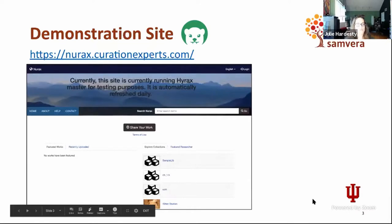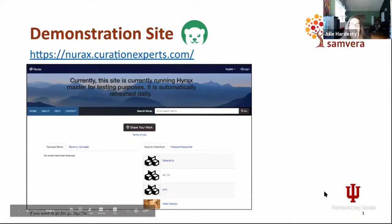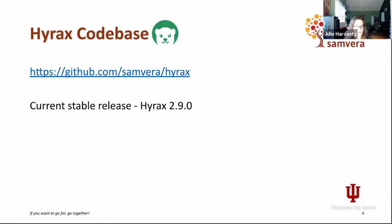Several optional features can be turned on in an administrative dashboard or added through plugins, and it's implemented as a Rails engine. It incorporates Blacklight for search and discovery and enables IIIF for digital object viewing. There is also a demonstration site hosted by Data Curation Experts at nurex.curationexperts.com — you can sign up for an account, try searching, create a collection, add a work, and see the administration dashboard. The current stable release available on GitHub under the Samvera organization is Hyrax 2.9.